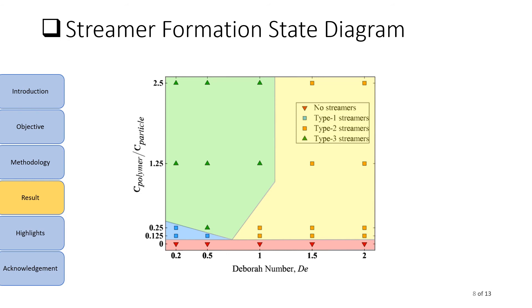This is our streamer formation state diagram. Here we have Deborah number on x-axis and concentration ratio on the y-axis. Colored regions are shown to identify the 4 regimes. We can see that no streamer forms in the absence of polymers, that is when concentration ratio is 0. This confirms that particle aggregation happens only due to particle polymer interaction and not due to self-aggregation of particles.